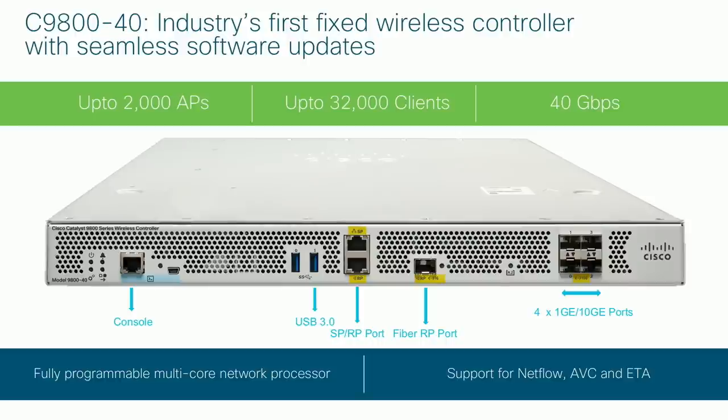The 9840 has four fixed 10-Gig interfaces for up to 40 Gbps. We are also introducing an RP interface for fiber — previously the RP for active and standby was only on Ethernet. Now you can also use fiber connectivity for the RP interface, useful in data centers without Ethernet.